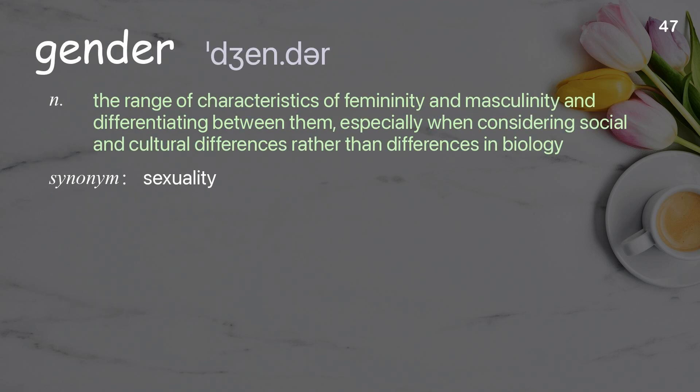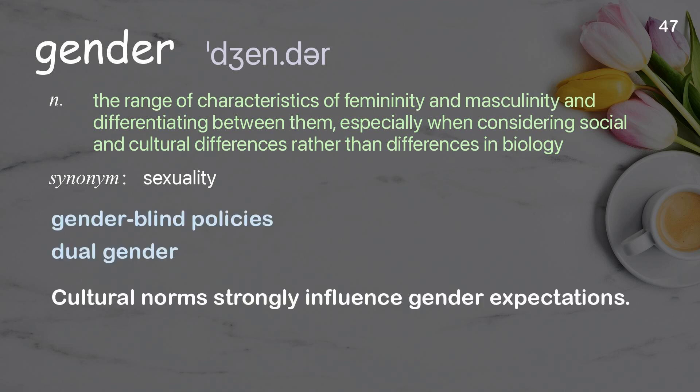Gender: the range of characteristics of femininity and masculinity and differentiating between them, especially when considering social and cultural differences rather than differences in biology. Examples: gender-blind policies, dual gender. Cultural norms strongly influence gender expectations.